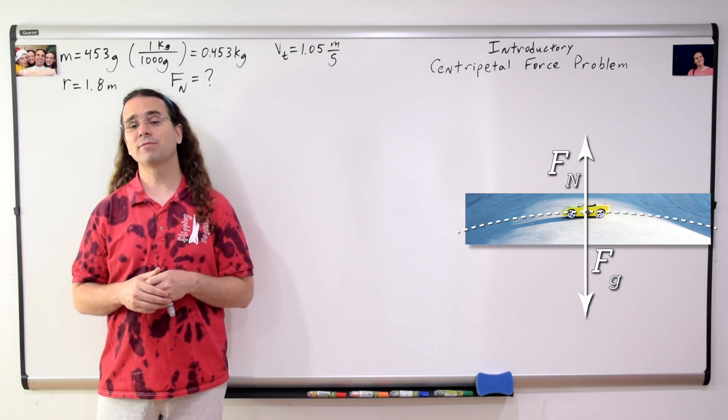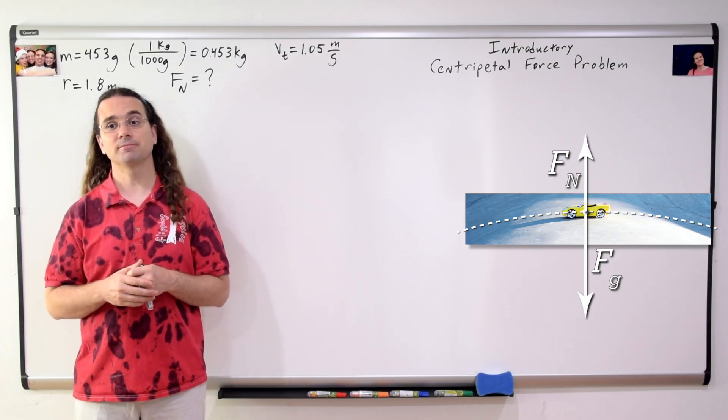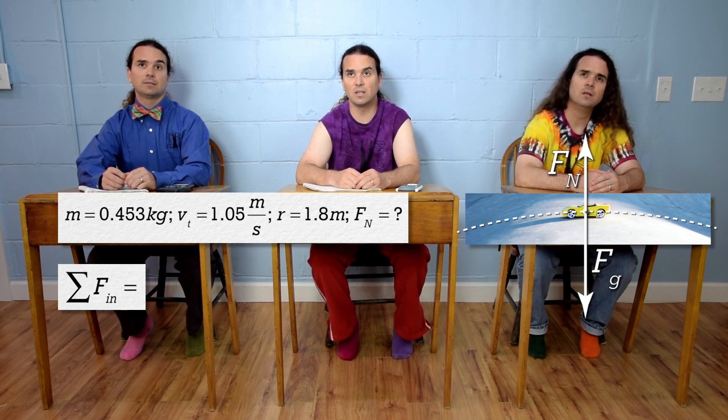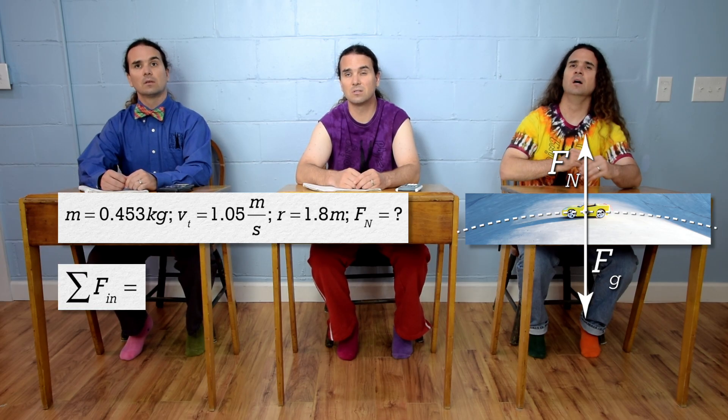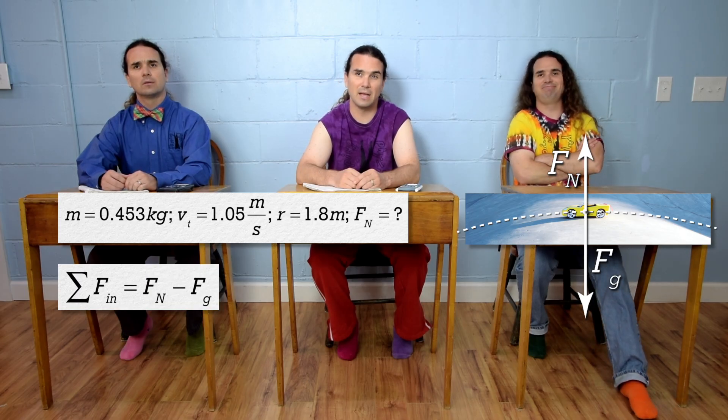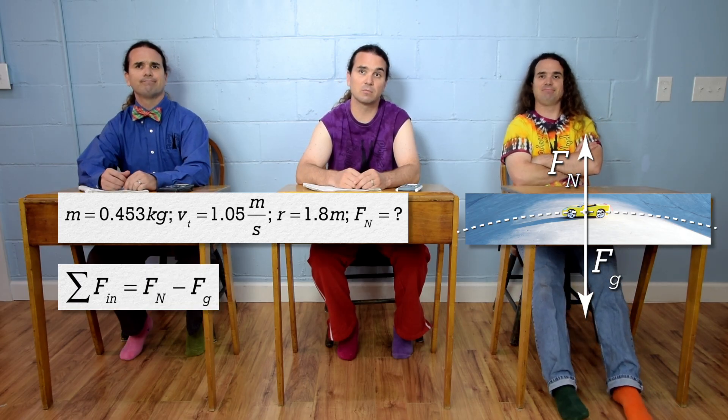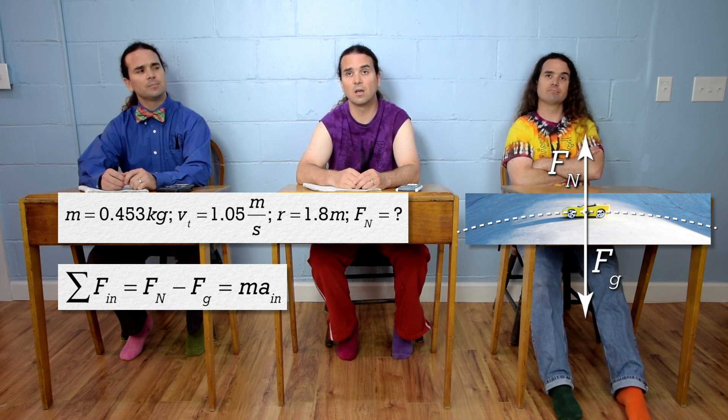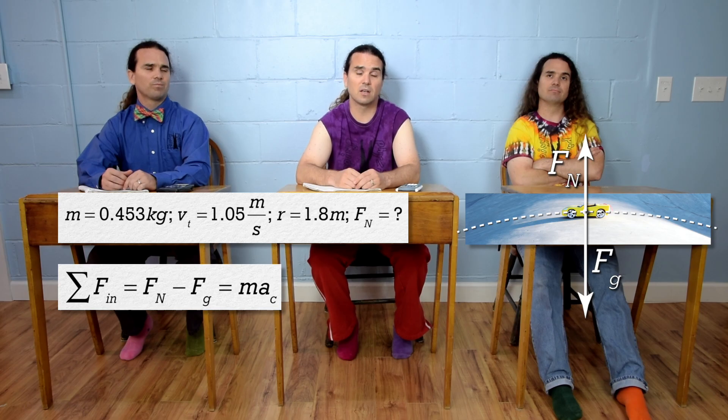Bobby, please sum the forces in the in direction. Okay, the net force in the in direction equals force normal minus force of gravity, which equals mass times acceleration in the in direction. And what is the acceleration in the in direction called? Centripetal acceleration.